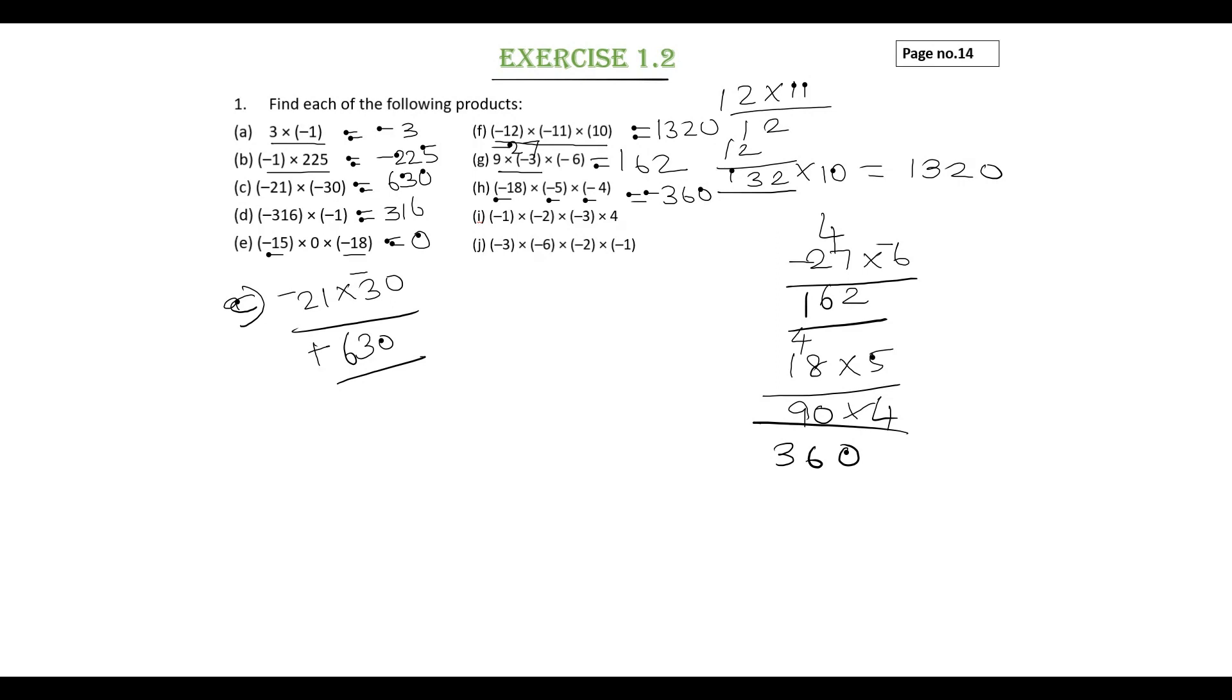i subdivision: minus 1 into minus 2 into minus 3 into 4. Minus 1 into minus 2 is 2, 2 into minus 3 is minus 6, minus 6 into 4 is minus 24.